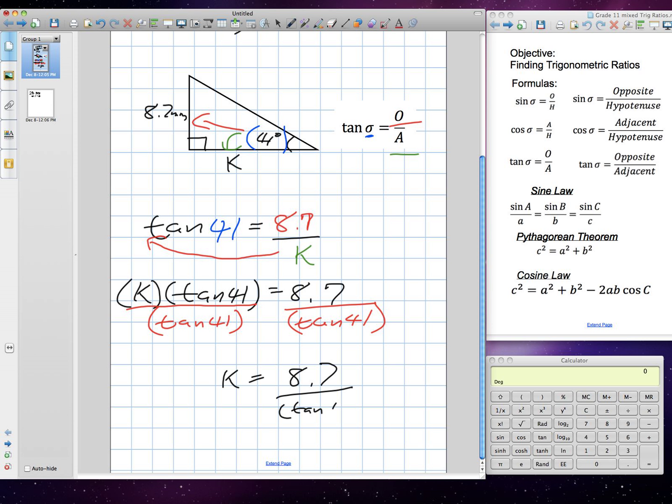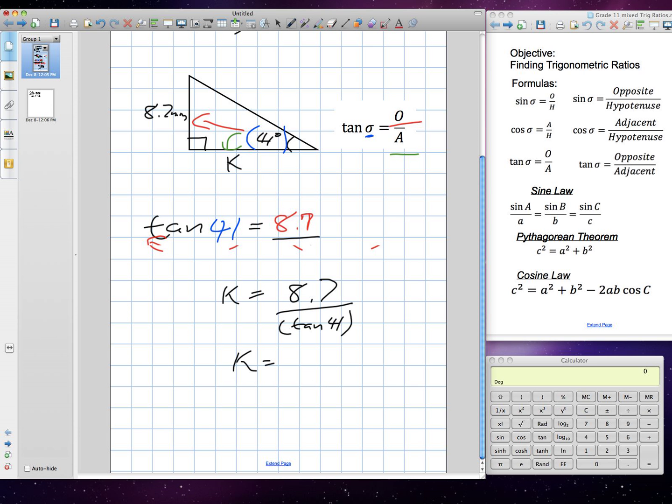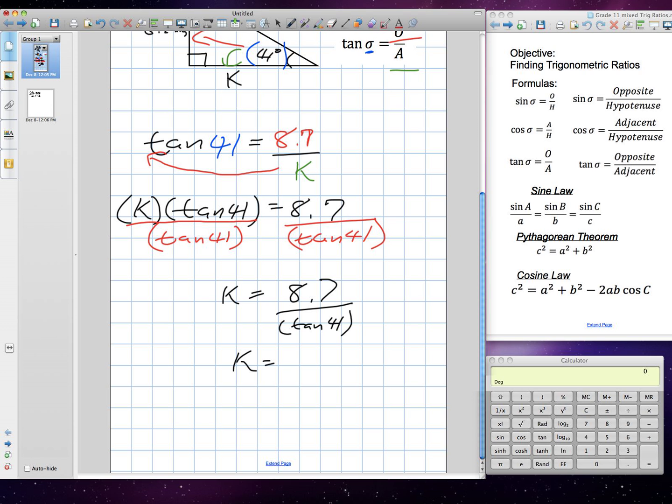K will be equal to 8.7 divided by tangent 41. And we're going to plug that into our calculator. Let's solve tangent 41 first. So, 41, 10. Okay. We get 8.7 divided by 0.8692. And it continuously goes on.